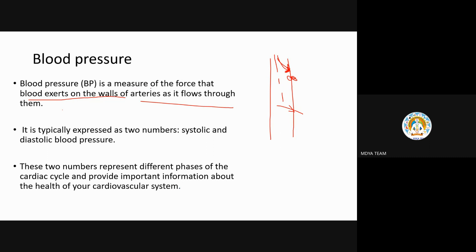Blood pressure is the measure of the force that blood exerts on the walls of arteries or veins. It is typically expressed in two numbers — systolic and diastolic — which represent different phases of the cardiac cycle and provide important information about cardiovascular health.